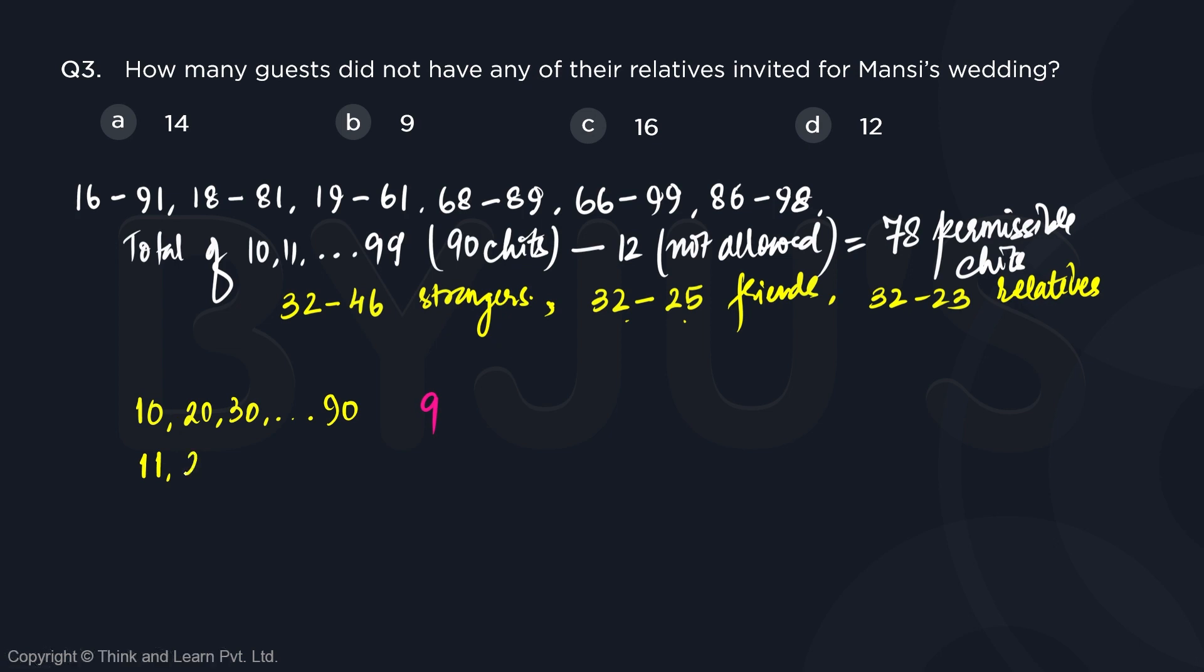So we can have all those numbers from 11, 22, 33 and so on up to 99. These are again nine numbers but in this we cannot take 66 and 99. So the two numbers 66 and 99 cannot be taken. So out of 9 we are left with only 7 such numbers.